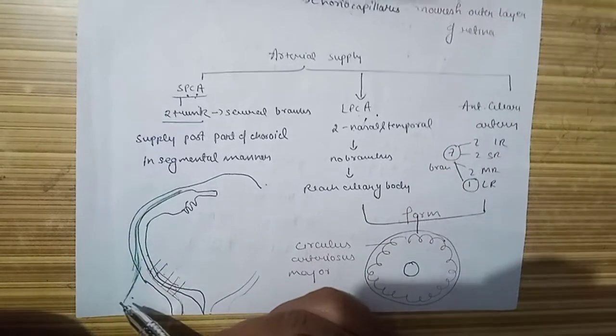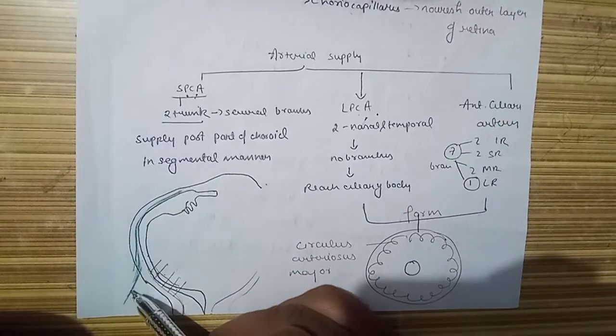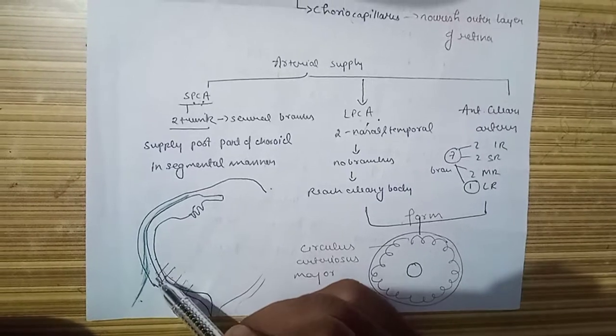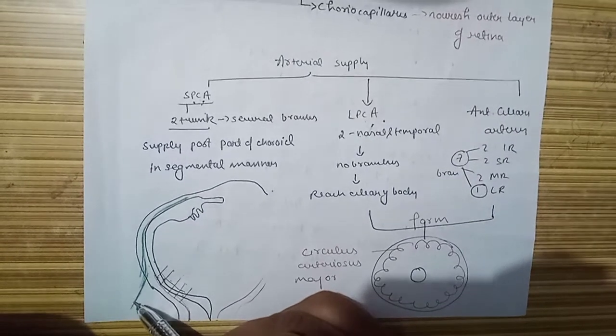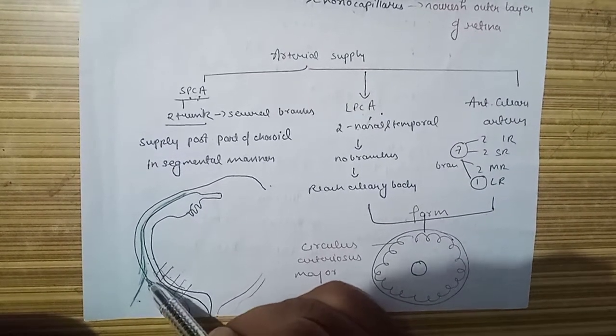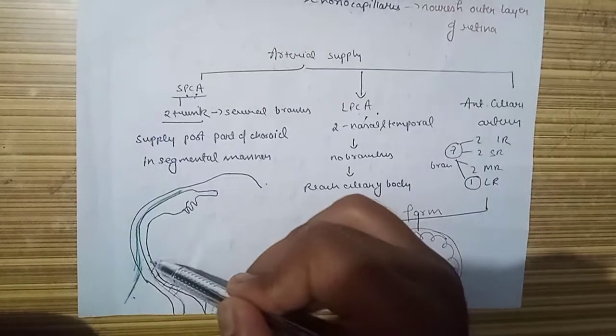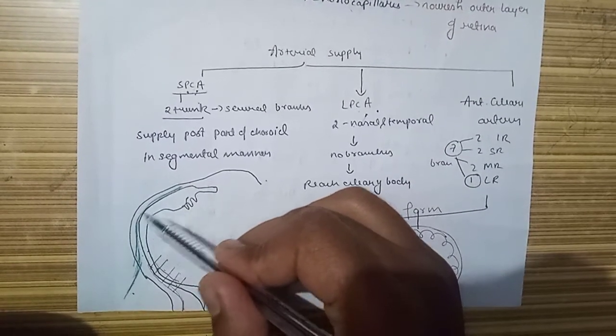The long posterior ciliary arteries are very important. The long posterior ciliary artery obliquely enters the suprachoroidal space to travel forward. These are long, so they travel up to the iris root.